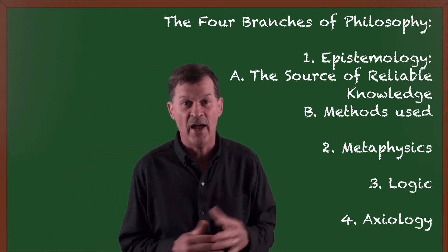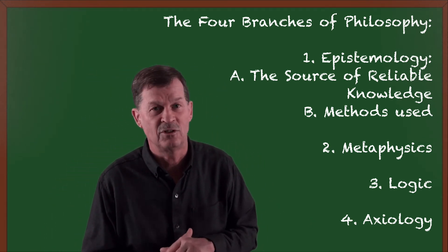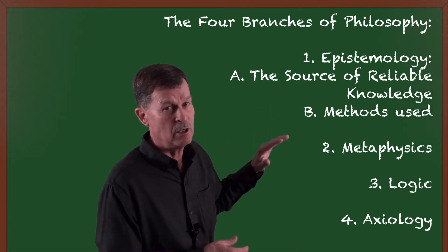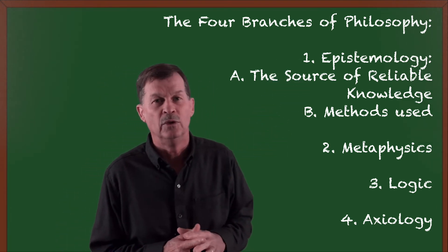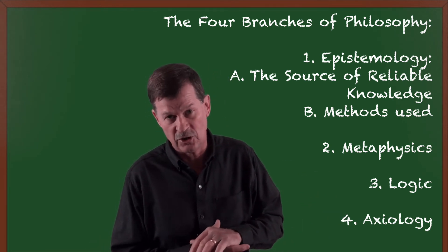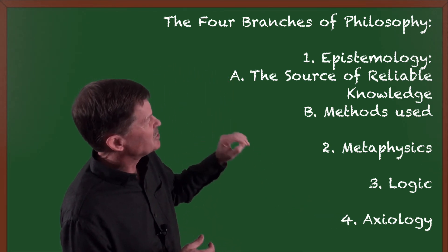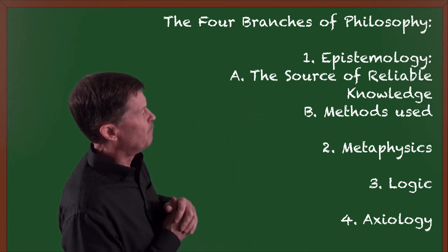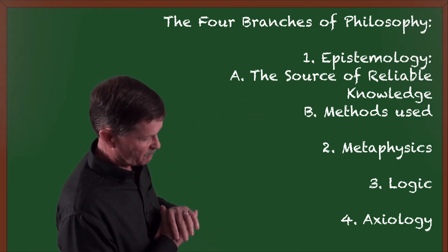Number four is axiology. Axiology has to do with values, has to do with ethics. And so after you've added everything up, it all comes down to what I value. What are my ethics for doing certain things in different situations? And so that is axiology. So those are the four branches of philosophy.